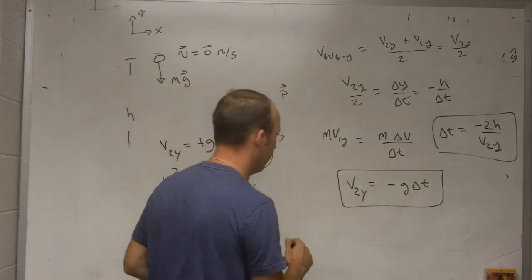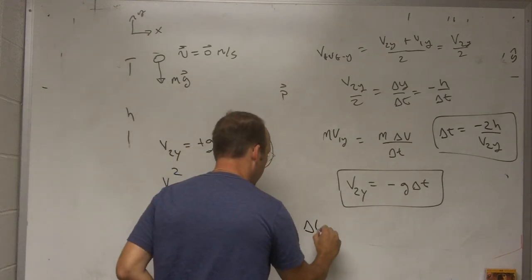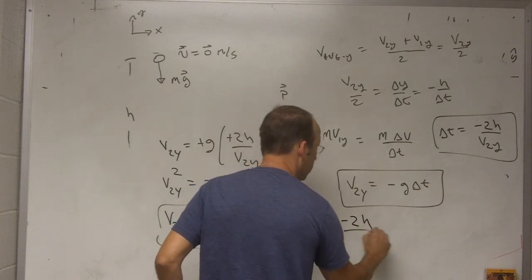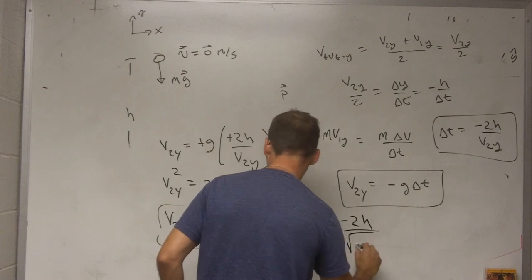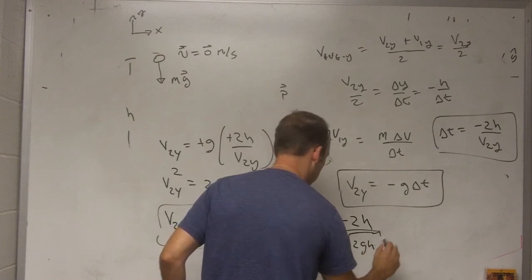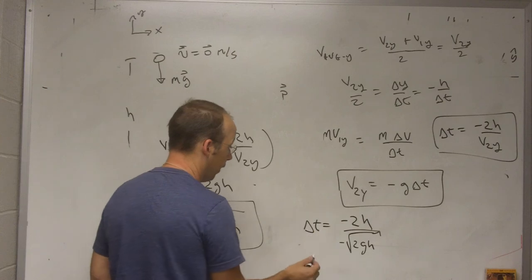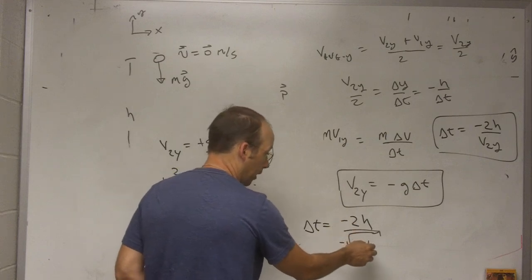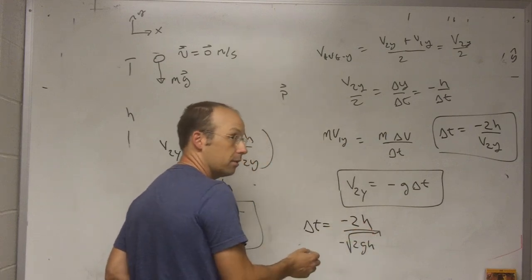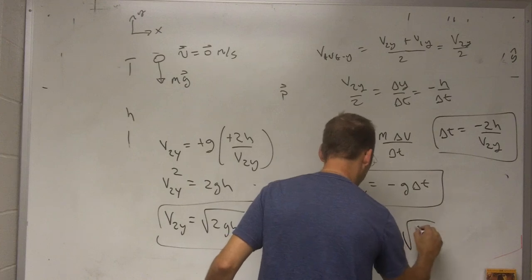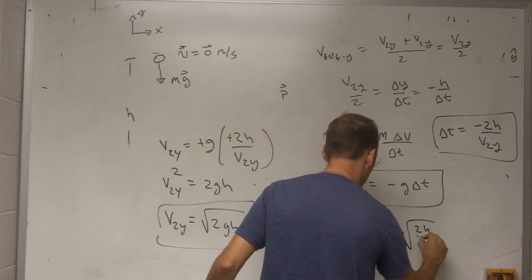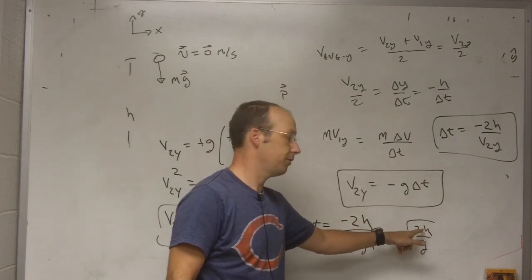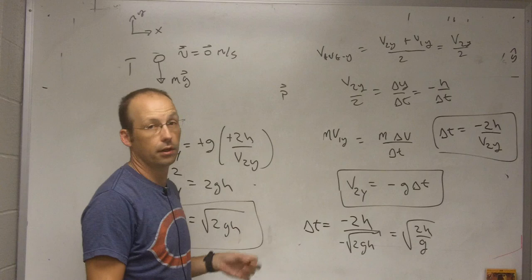So I'm going to take the negative version of that over here to make this thing work. Then over here, I get delta t equals negative h over negative the square root of 2gh. I can rewrite this as, if I have 2 divided by the square root of 2, that's the square root of 2 on the top. And h divided by the square root of h is the square root of h on the top. So I get the square root of 2h over g. Meters over meters per second squared gives me second squared. Take the square root, and I do get the correct time.